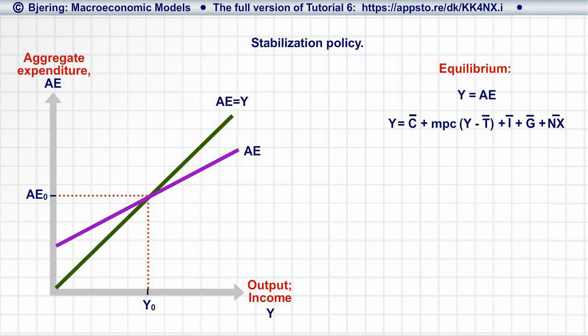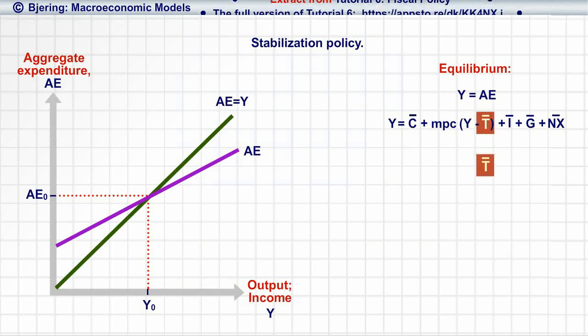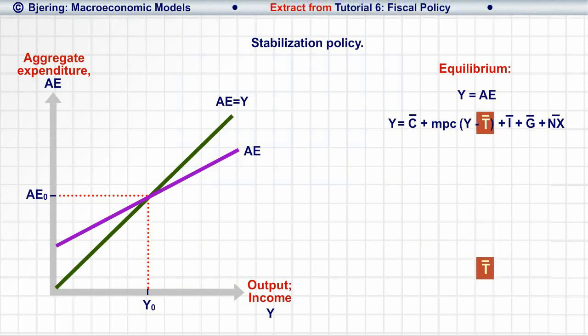Among the variables that enter into the AE function are tax revenue, T, and government expenditure, G. We assume that T and G are exogenous, T-bar and G-bar, as are investment and net exports, I-bar and NX-bar, respectively.